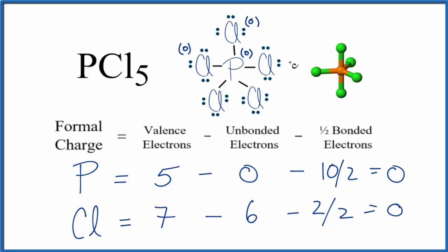Having these formal charges all equal to zero tells us that this is a very favorable or likely Lewis structure for PCl5. This is Dr. B with the formal charge for each element in PCl5, phosphorus pentachloride. Thanks for watching.